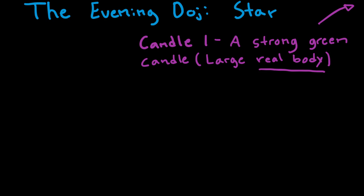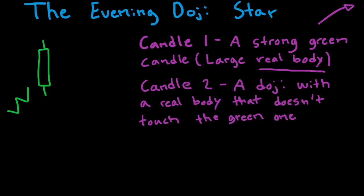But the first candle is a strong green candle that comes after an upwards trend. So prior to the pattern, we might have had a trend. Imagine that this is a trend, and then we have a strong candlestick that looks something like this. All right, candle two of the Evening Doji Star is a doji. It is a doji with a real body that doesn't touch the green one.